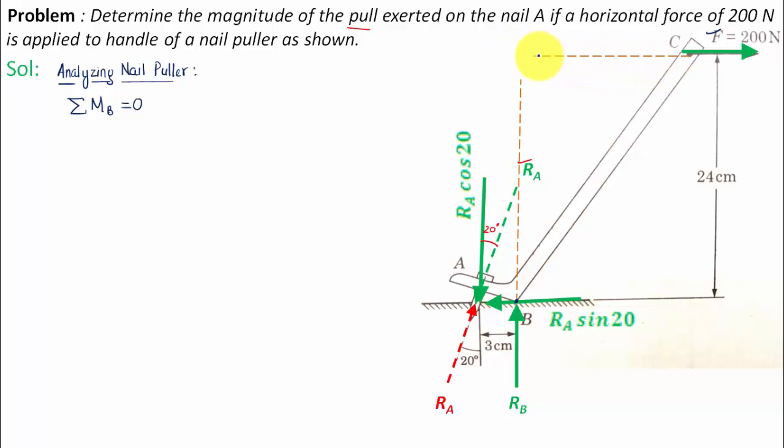If I can do a little construction over here, this is the line of action of force F, 200 newtons. If you were to drop a perpendicular from point B, it would be this one. This distance, the perpendicular distance, is equal to 24 centimeters.